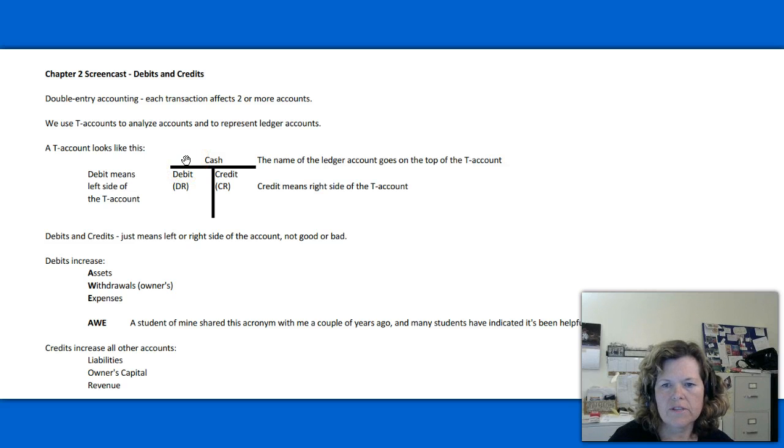Generally on the top of the T-account, you will see the name of the ledger account that we're representing here. On the left-hand side under the T, we would list transactions that are debits. All debit means is that it's listed on the left side of the T-account. That's all it means. And you'll often see dr representing just a shortcut name for debit.